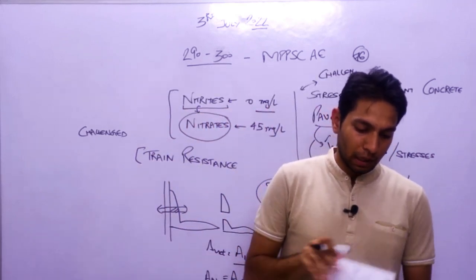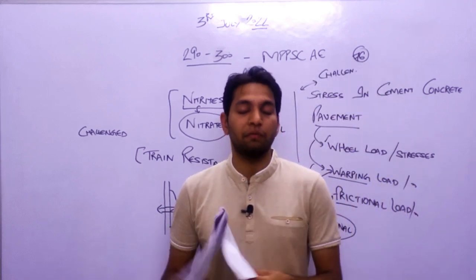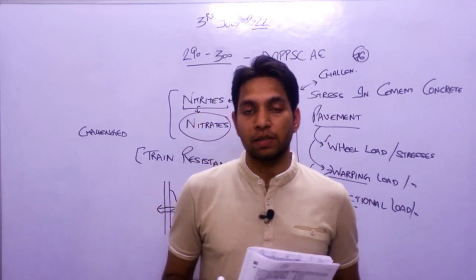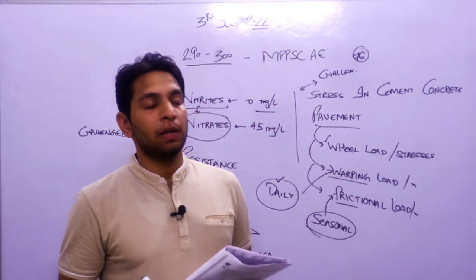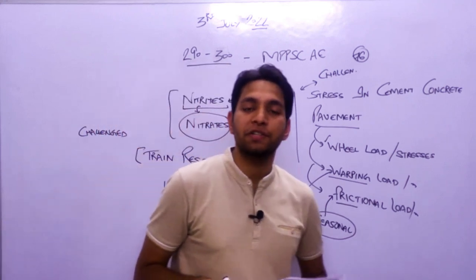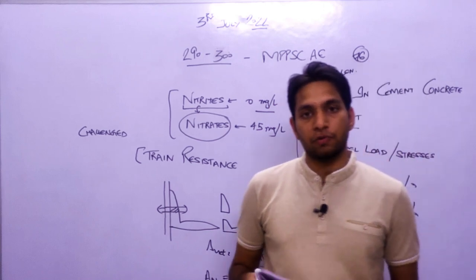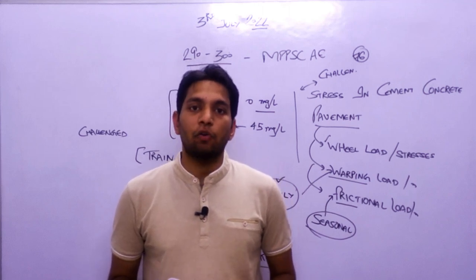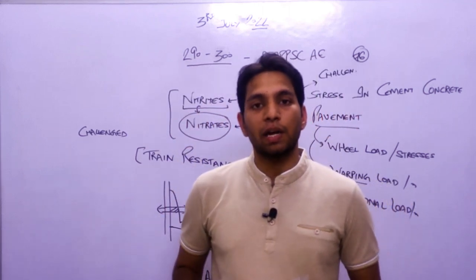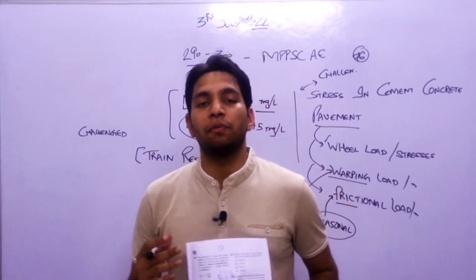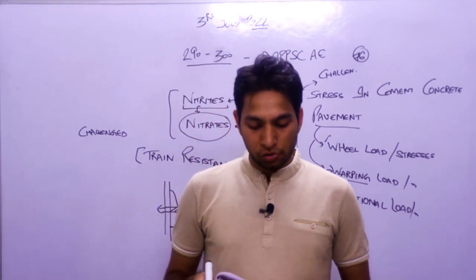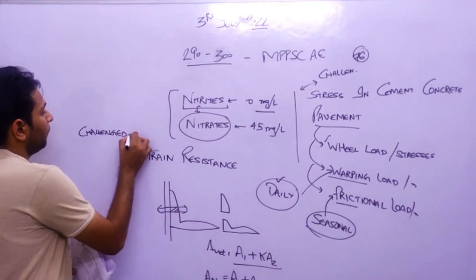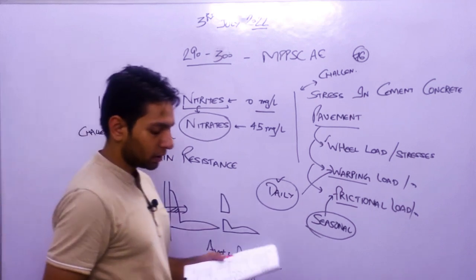Another challengeable question asks for the width of the ballast section at the bottom of the track for broad gauge. The options are 4200, 4600, 4800, and 5000. The commission's answer is 4800, but this can be challenged as some books state 4200 and others state 3800, so the question has ambiguity across references.